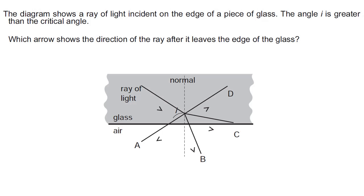Question 2: The diagram shows a ray of light incident on the edge of a piece of glass. The angle I is greater than the critical angle. Which arrow shows the direction of the ray after it leaves the edge of the glass? Remember: when the angle of incidence is greater than the critical angle, total internal reflection takes place. Options A, B, and C show refraction, but only D shows total internal reflection. The answer is D.